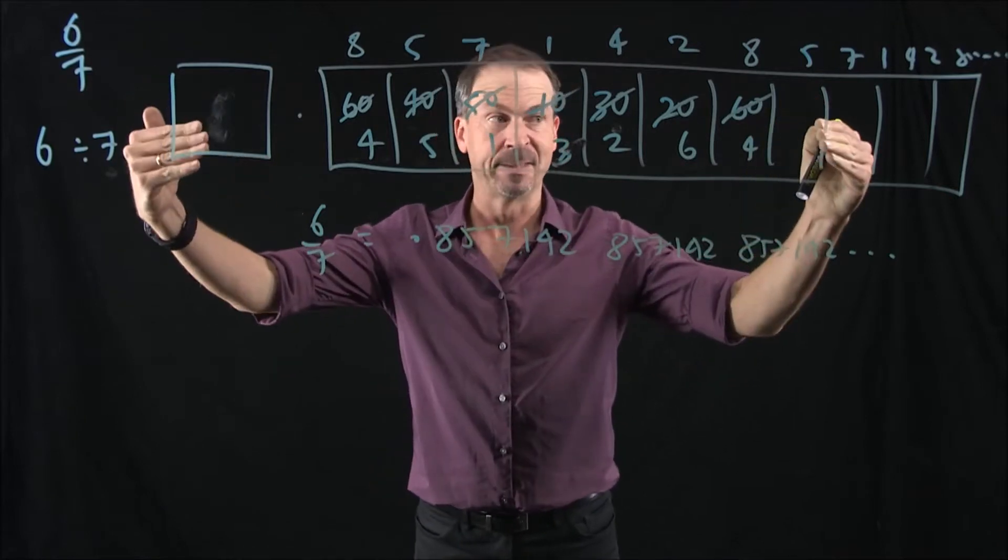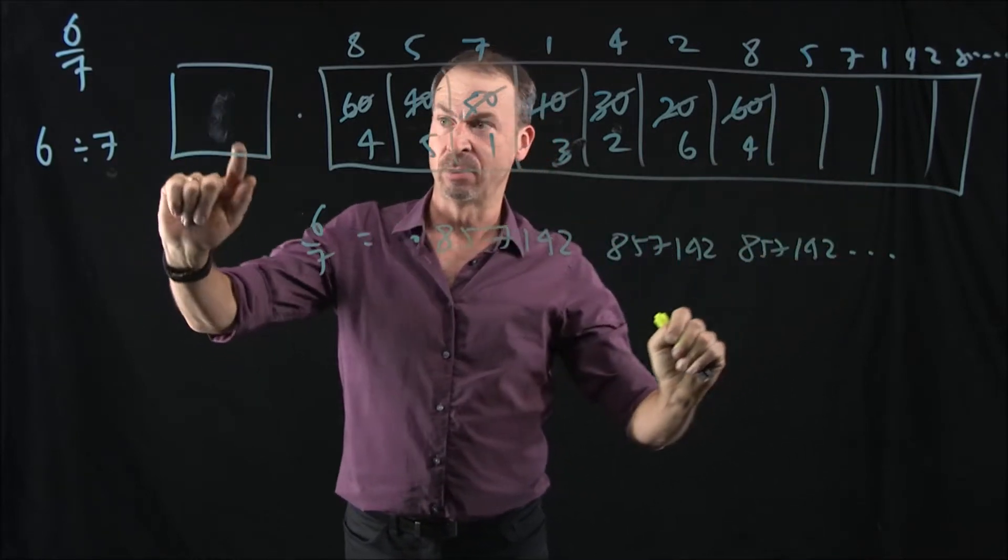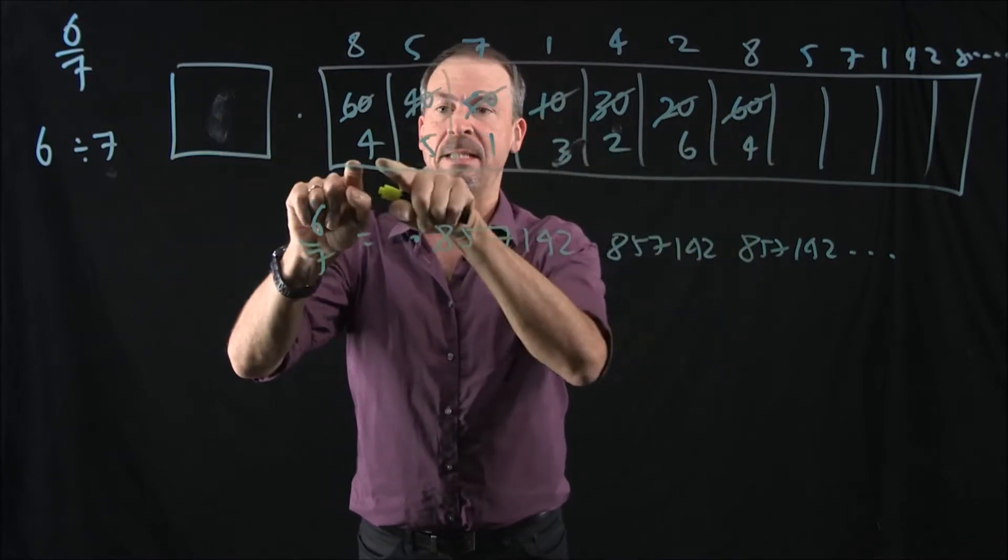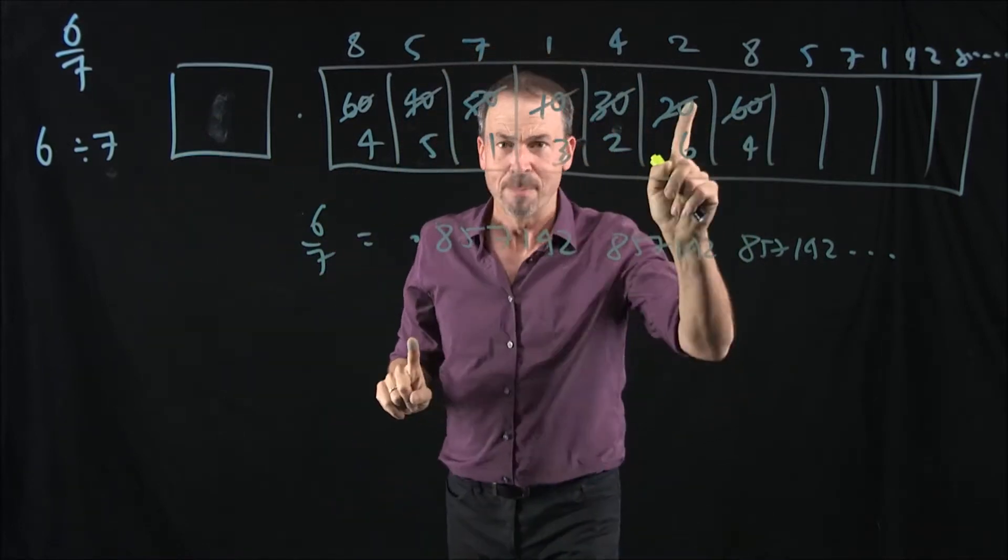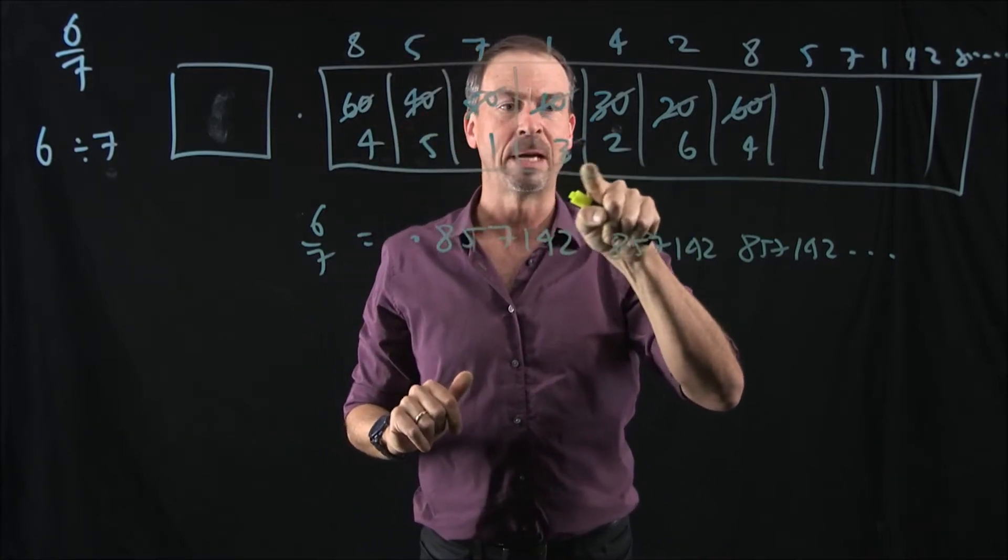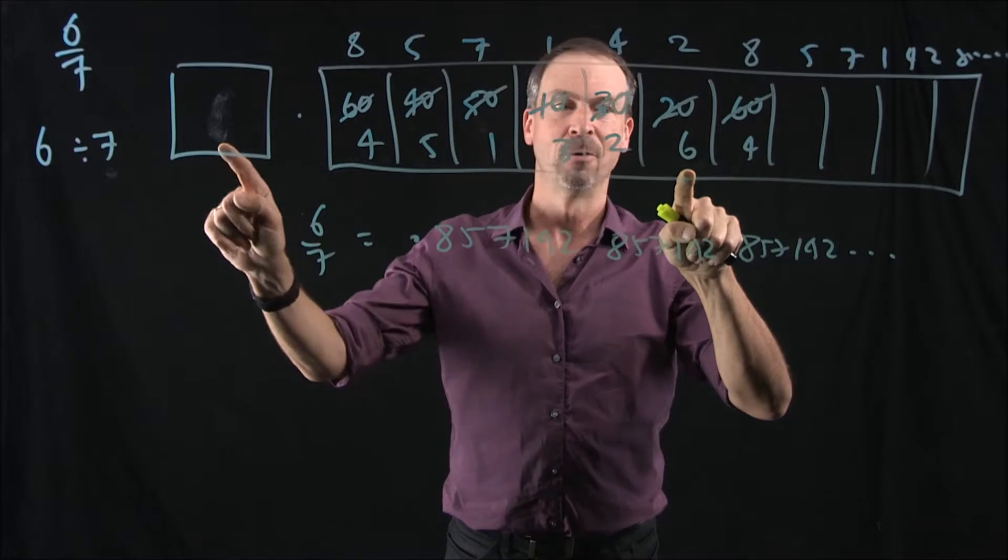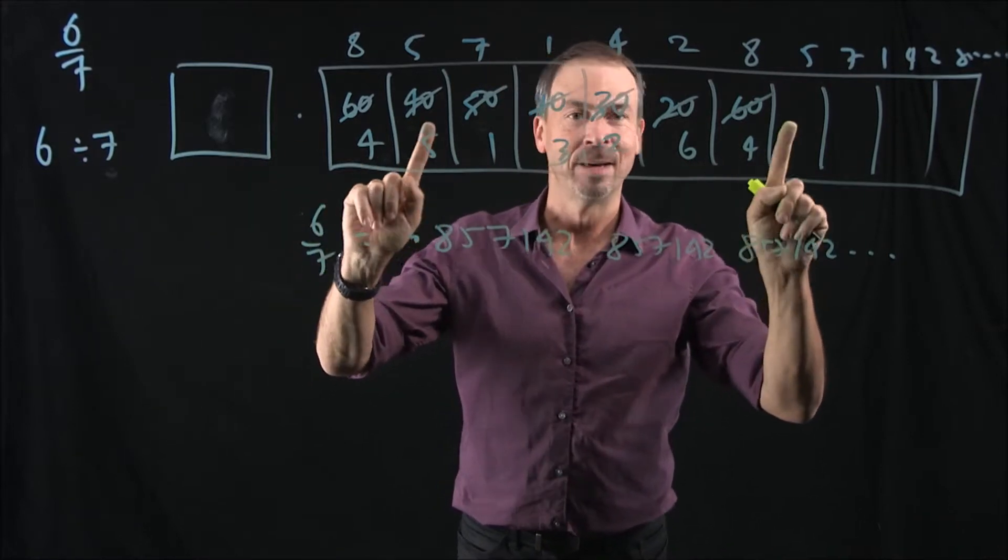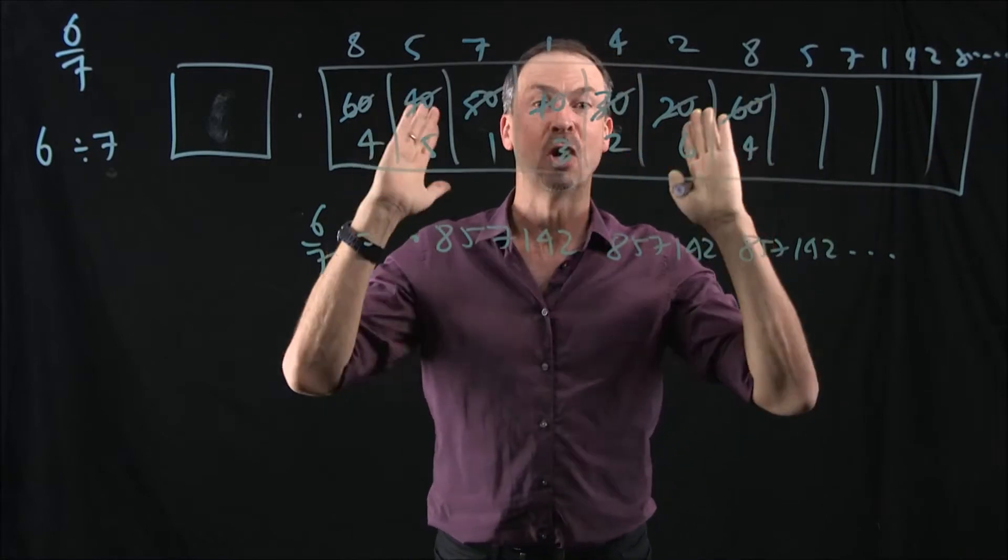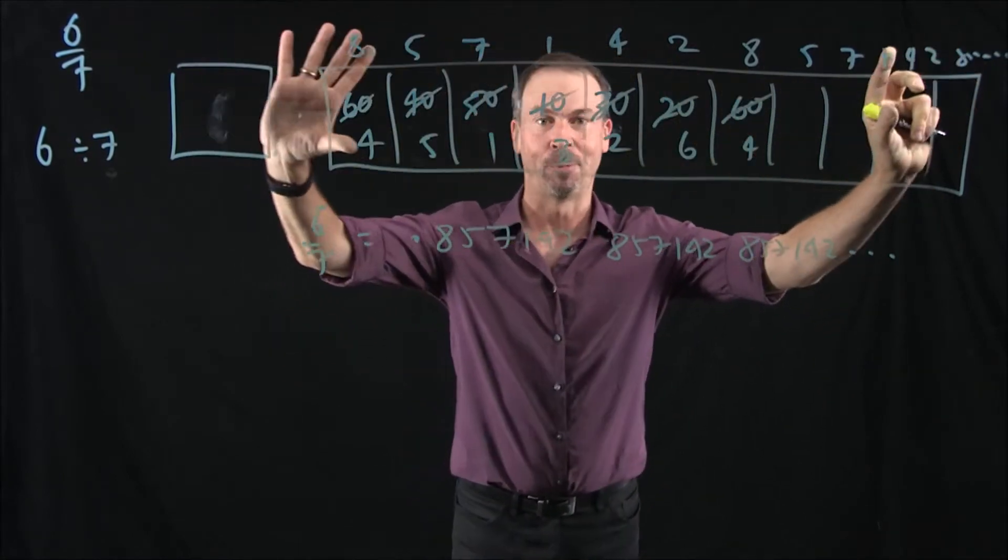Here's the example six-sevenths we had in a previous lesson. We saw that we started with the number six, we got all these different numbers for unexploding, with these different remainders which got unexploded. Now the remainders, we've got a remainder of four, remainder of five, remainder of one, remainder of three, remainder of two, remainder of six, remainder of four, remainder of five, so the remainders start repeating. So as soon as the remainders start repeating, we know we're in a repeating pattern, our answer will repeat as well.